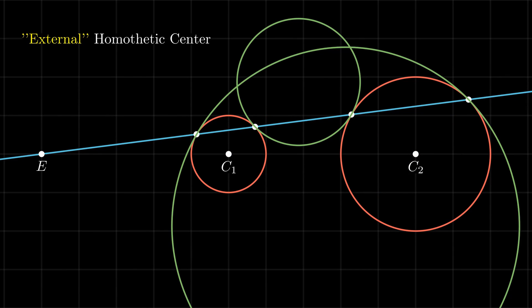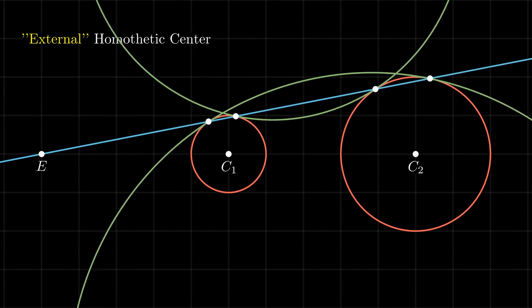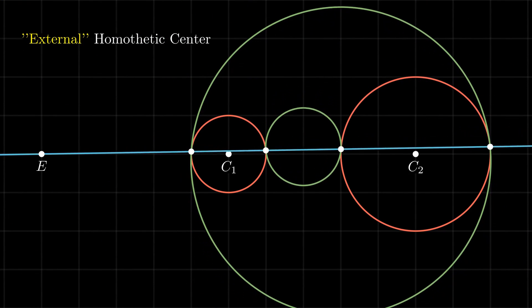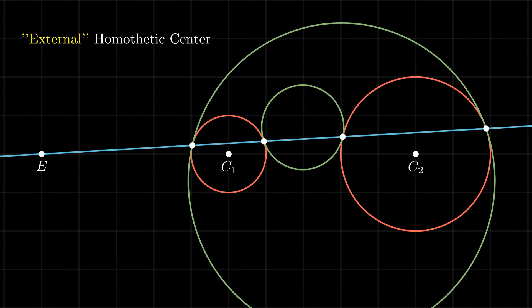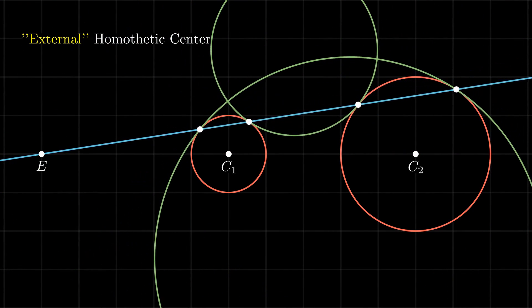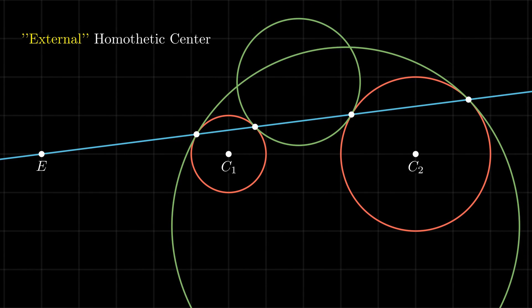Drawing a different line through the homothetic center, we get new points of intersection and thus a different pair of tangent circles, giving a family of circles each of which is either internally or externally tangent to both given circles.